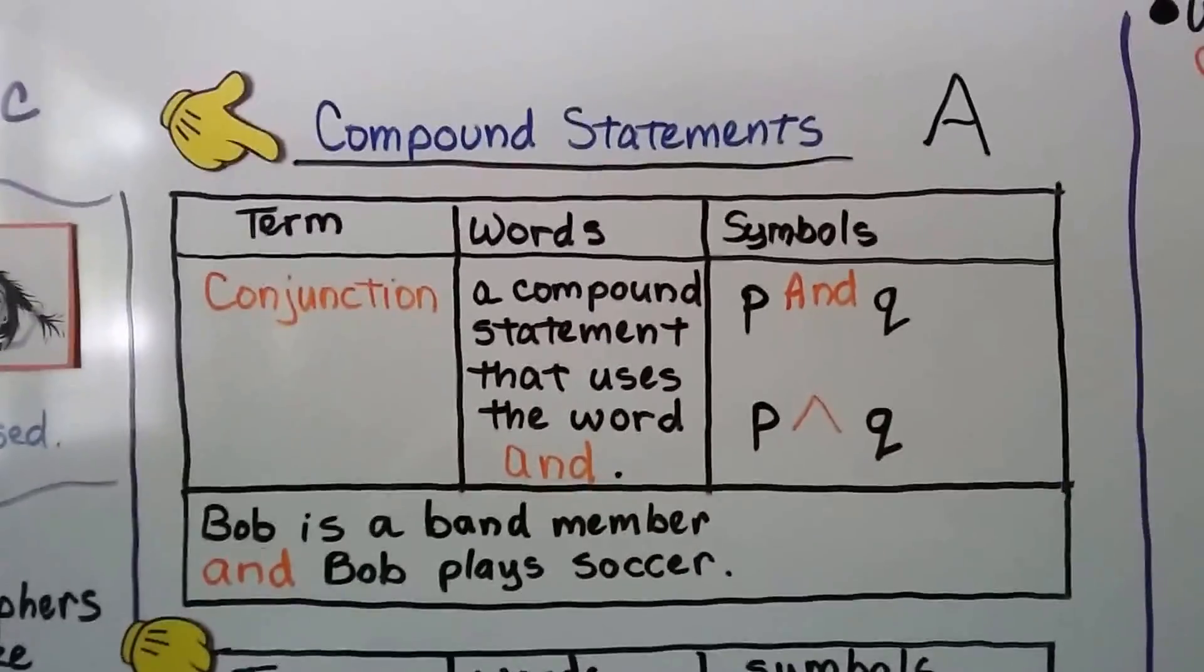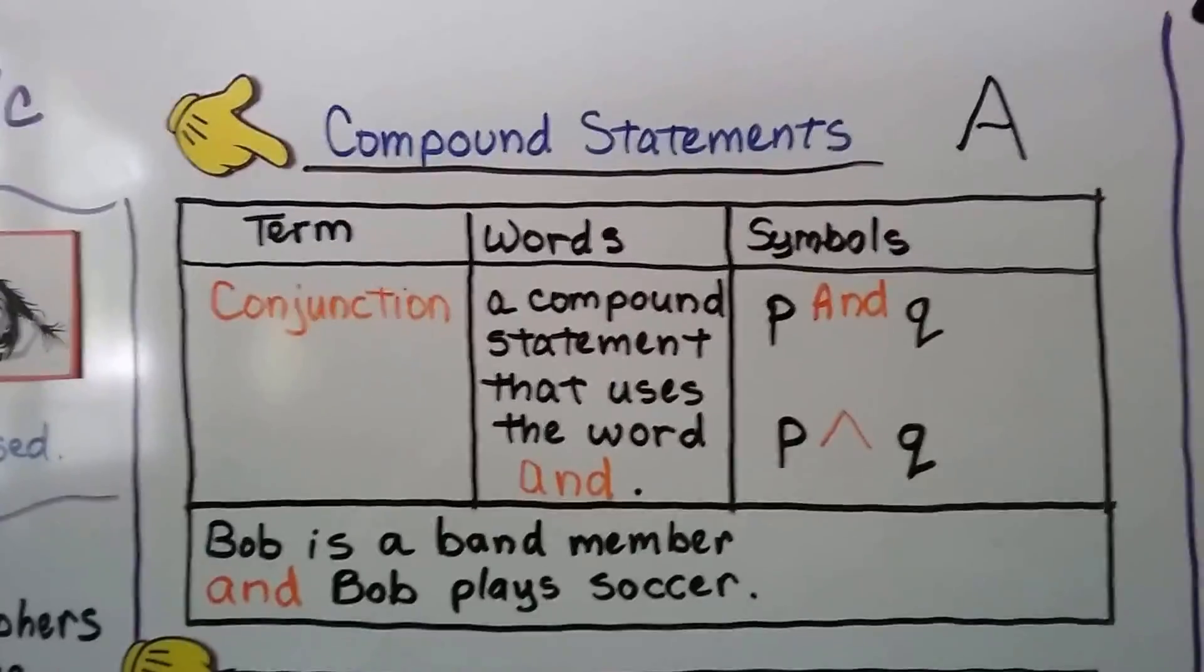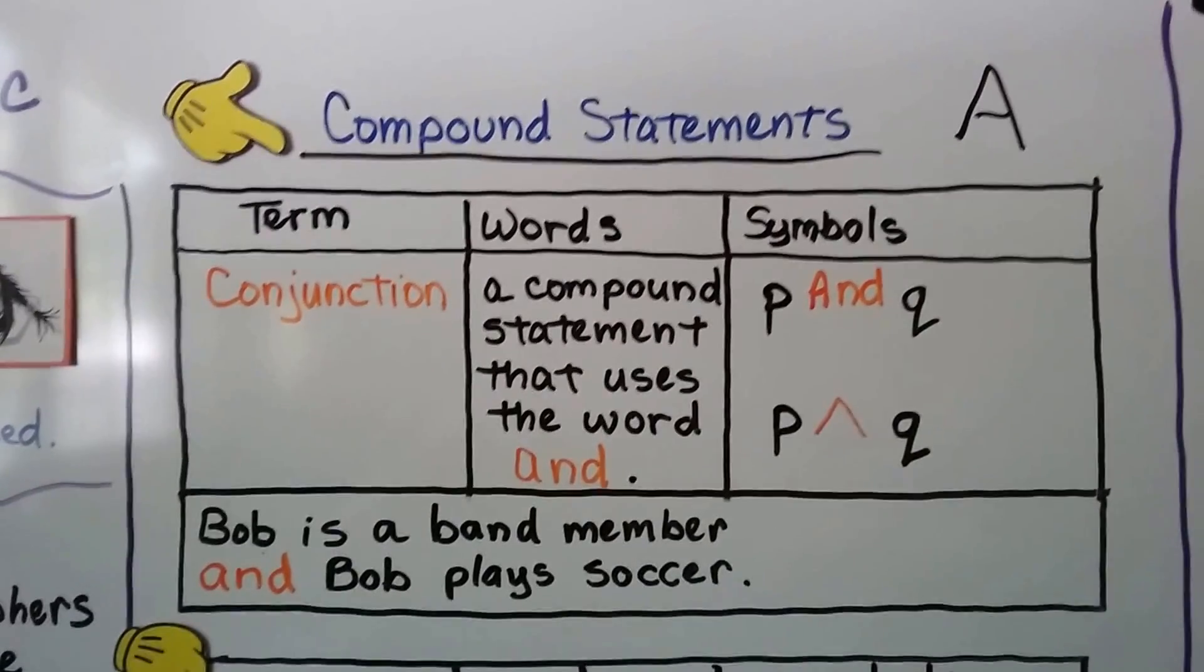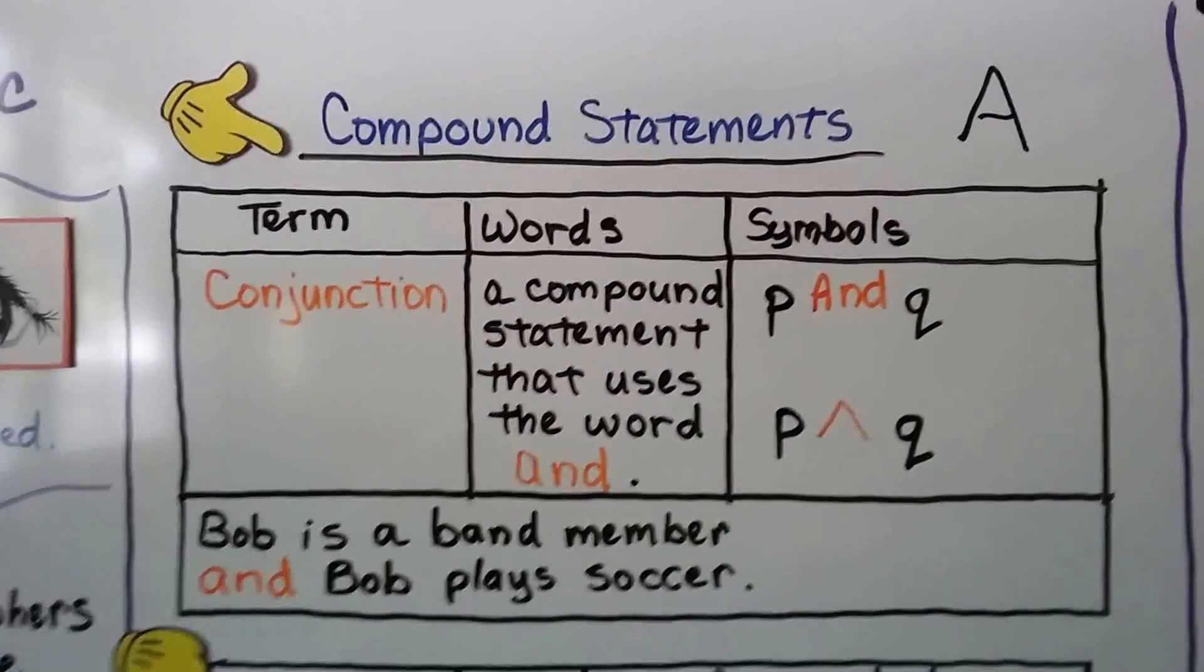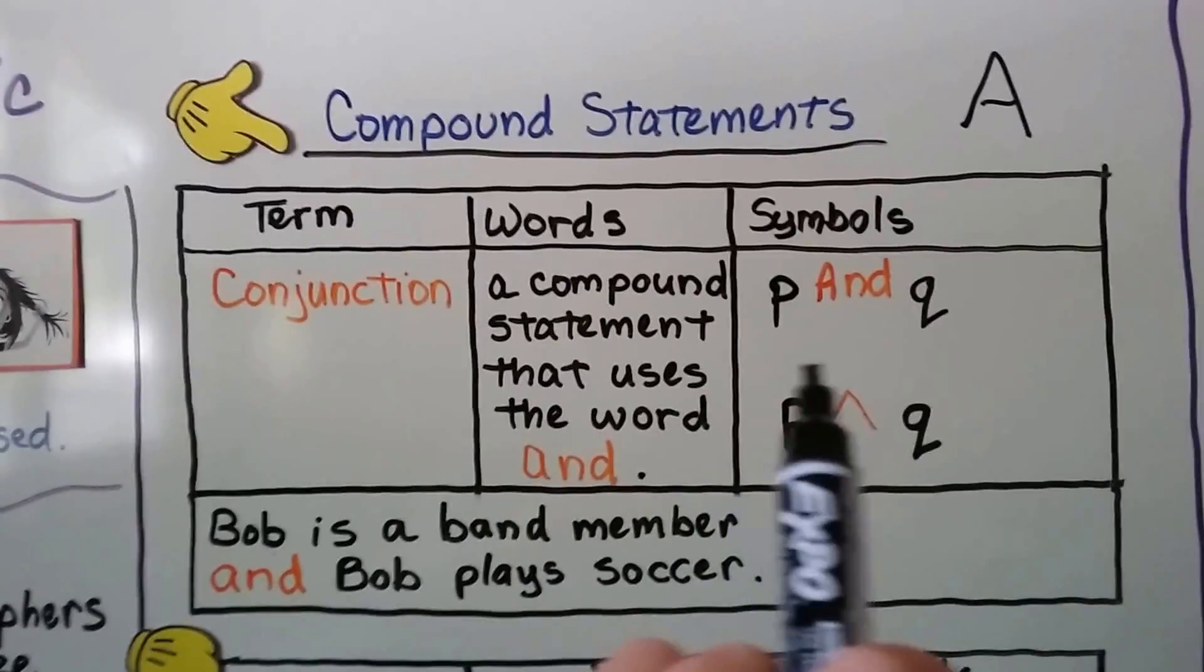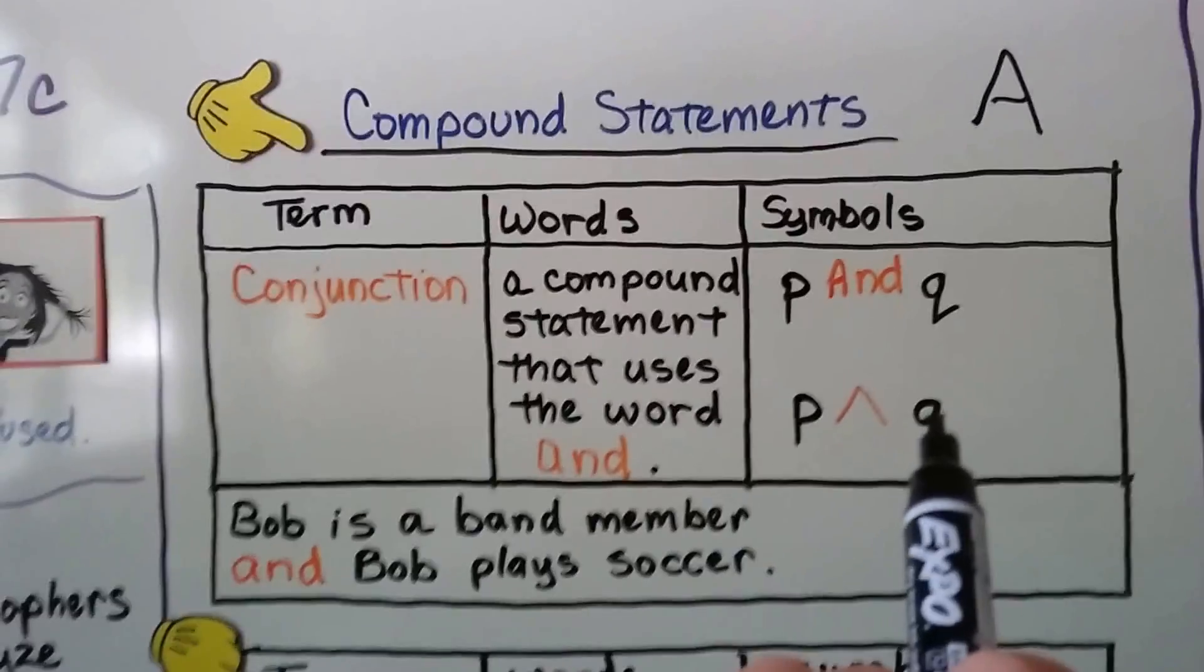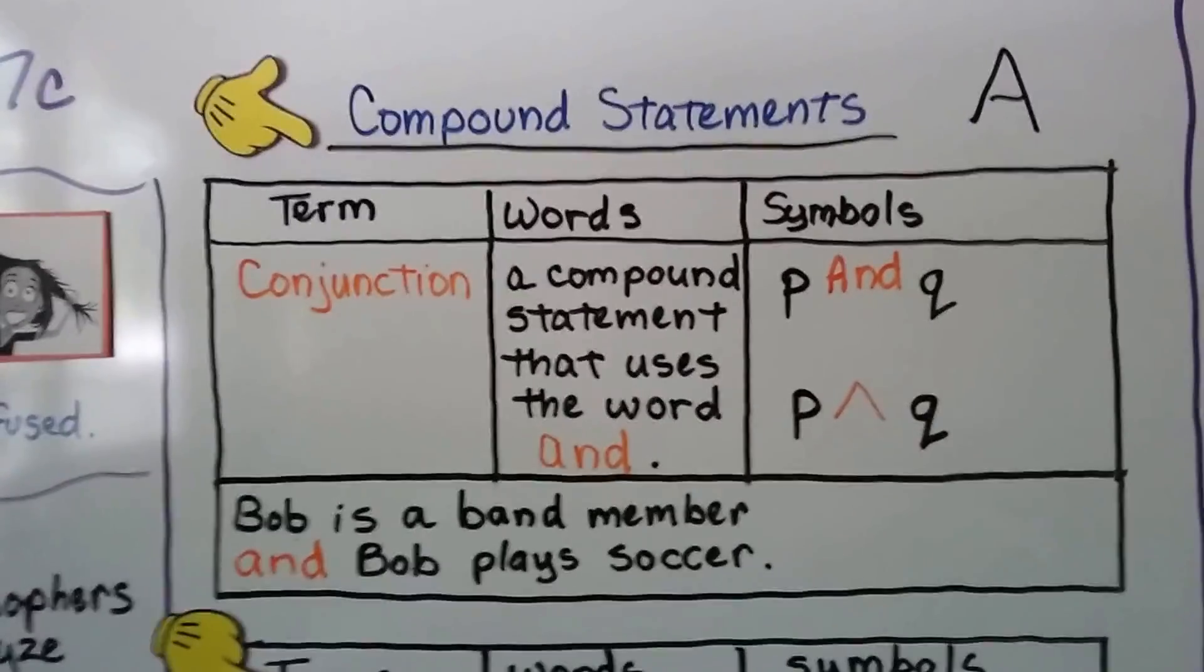I've got some notes for you. We've got some compound statements. Our term is conjunction, and it means a compound statement that uses the word and. For symbols, we would have P and Q. We could write P, then this caret, and then the Q for P and Q.